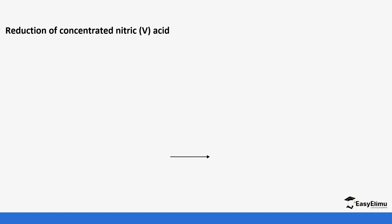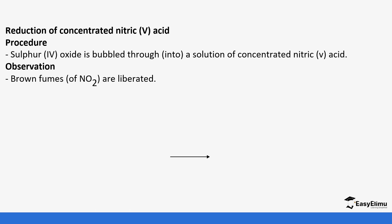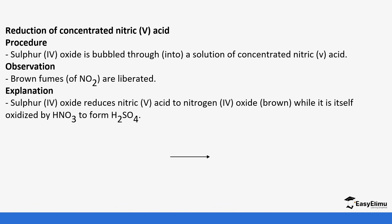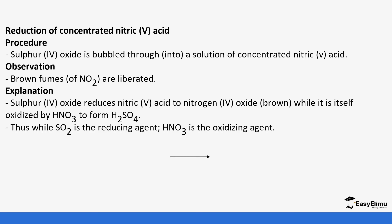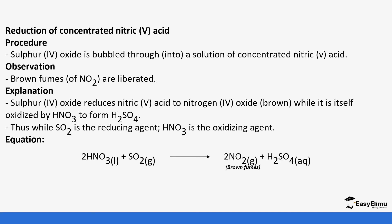Sulfur dioxide also causes the reduction of concentrated nitric acid. When you bubble sulfur dioxide into a solution containing nitric(V) acid, you notice brown fumes of nitrogen dioxide (NO₂), because sulfur dioxide reduces nitric(V) acid to nitrogen dioxide, which is brown, and is itself oxidized to form sulfate ions. Sulfur dioxide is the reducing agent while the nitric acid is the oxidizing agent — recall from nitrogen and its compounds that nitric acid is one of the most oxidizing acids. Sulfuric acid (H₂SO₄ — sulfur(VI) acid, not sulfurous acid) is also formed.